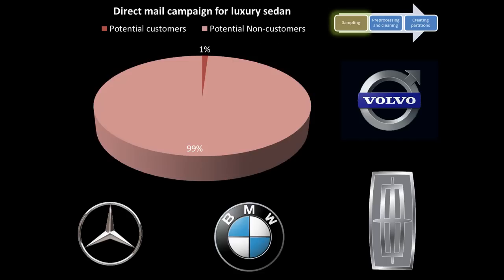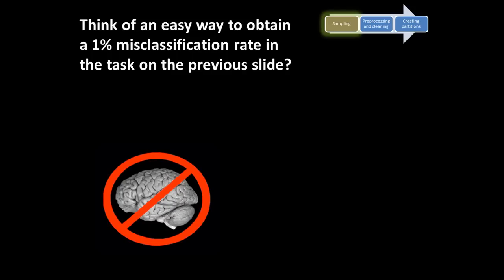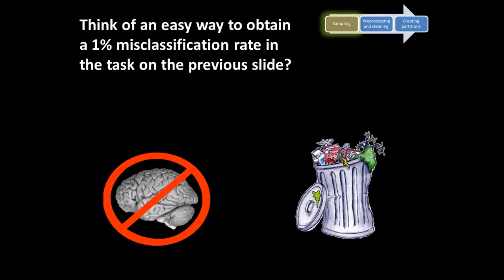Given the nature of this problem — that only 1% are actually potential customers — suppose I say I'm going to take every person and classify them as a potential non-customer. My model is to classify everybody as a non-customer. What is the error rate? The error rate is only 1%, because 99% of the people are non-customers. So when I predict everybody is a non-customer, I'm going to be right 99% of the time. This trivial, stupid model has only a 1% misclassification rate. So 1% misclassification doesn't seem as good as it originally appeared — this solution goes straight in the garbage can because it's useless.